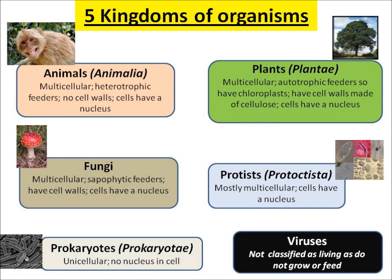Plants have chloroplasts and cell walls made of cellulose, and their cells also have a nucleus. Fungi are also multicellular — like mushrooms and toadstools. They are saprophytic feeders, meaning they live off decaying matter. They have cell walls and their cells do have a nucleus. Protists are a mixed group of organisms and are mostly multicellular, with cells that do have a nucleus.